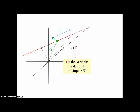T is a variable scalar that multiplies vector V. So that, if T is 1, you get the first point that we talked about. And if T is 2, then you get another point. If T is negative 1, you get another point, and so on. And then R of T is a vector function.